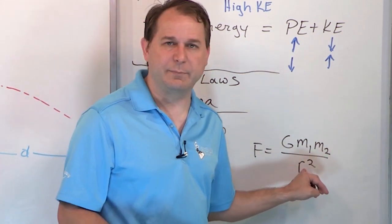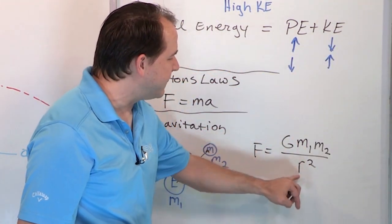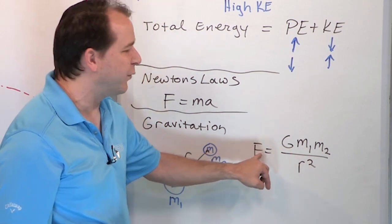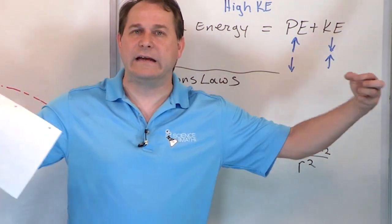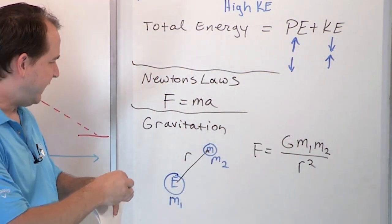But if we increase the distance between them, like if we stretch out the earth and moon even bigger, then since it's in the bottom we're dividing by a bigger number so the force actually goes down as we make things get farther and farther apart. So this is called the universal law of gravitation.